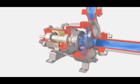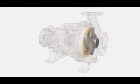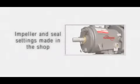Because the critical running clearance is set off the rear cover and not the casing, several advantages are realized. Impeller and mechanical seal settings can be made in the shop, on the bench, instead of under adverse field conditions.